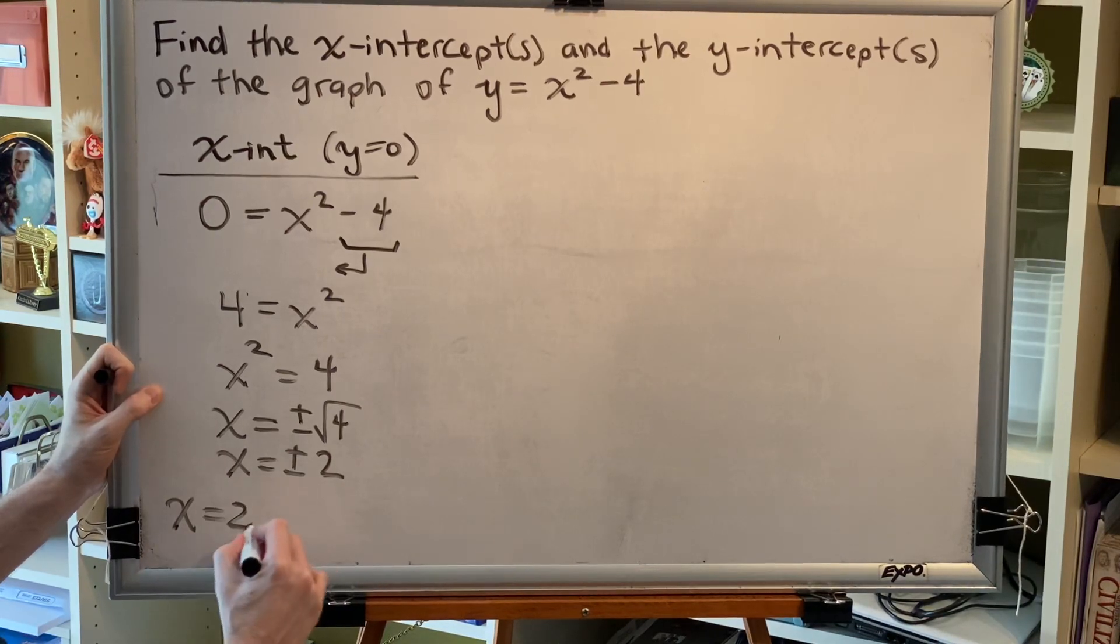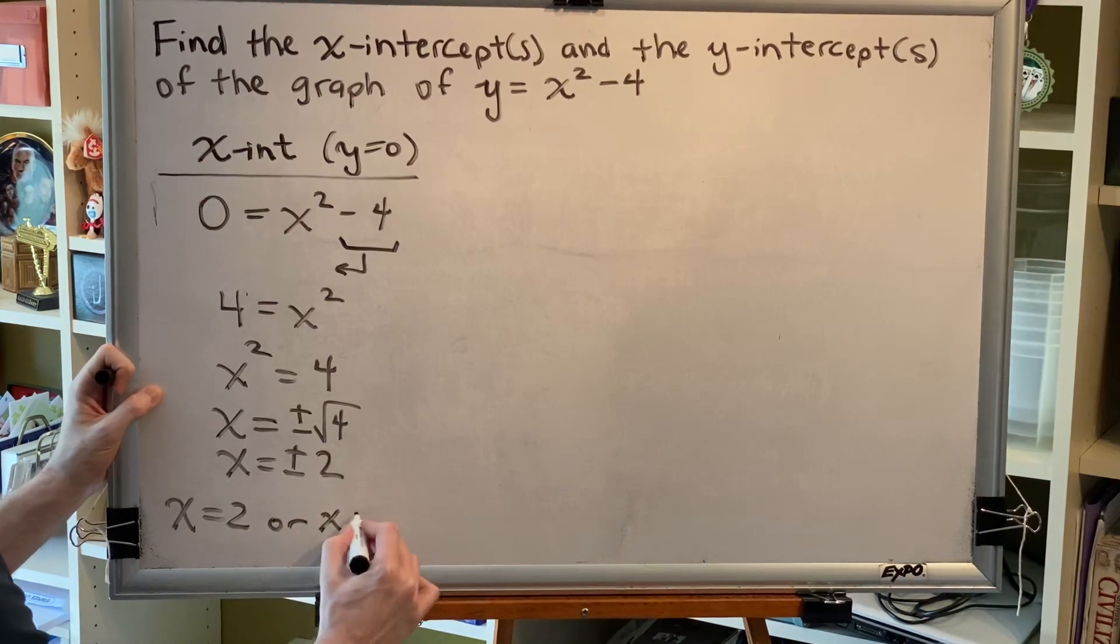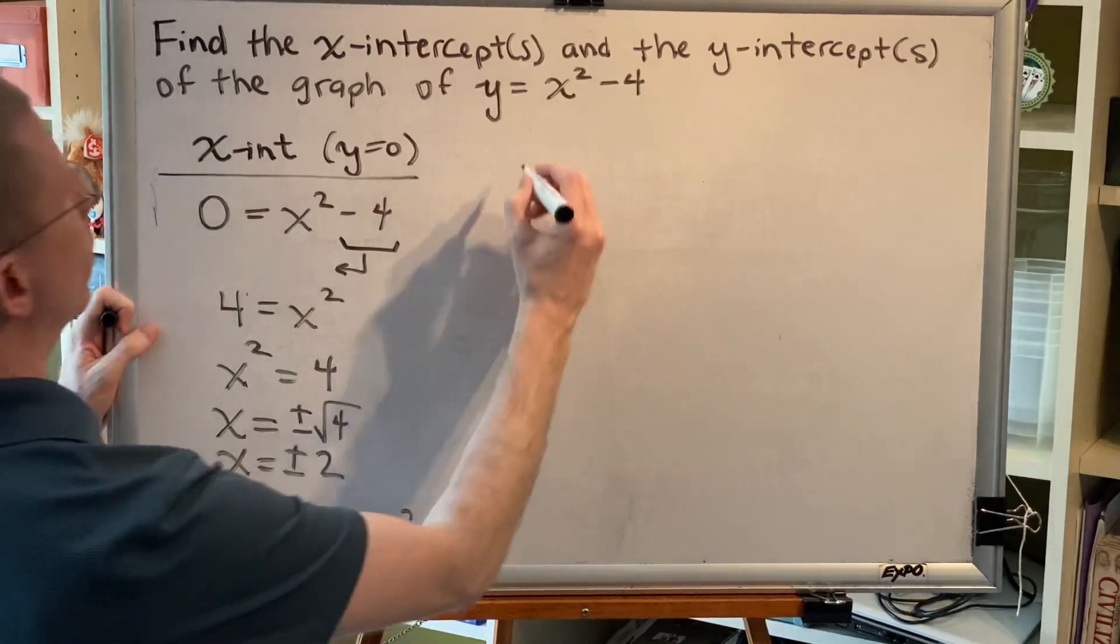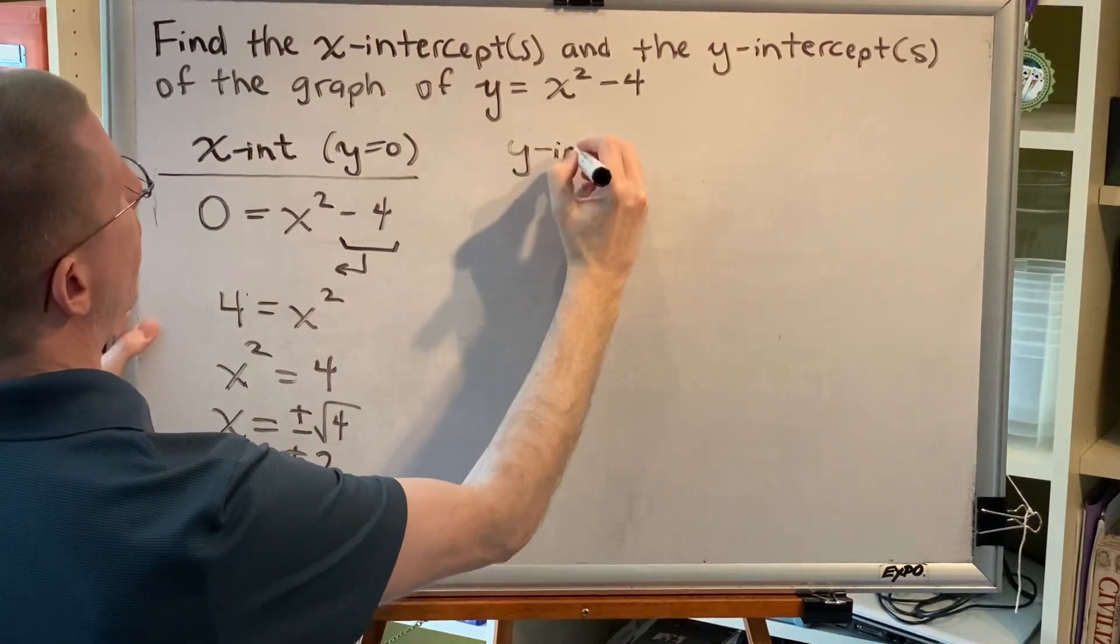So I get x equals plus or minus 2, x equals 2, or x equals negative 2. There are two x-intercepts. Now we'll look for y-intercepts.